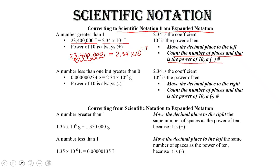This is going to be a positive number because the number is greater than 1. Now, if the number is less than 1 but greater than 0 — so we have a really tiny number — such as 0.000000234 grams, the scientific notation is 2.34 times 10 to the minus 7.